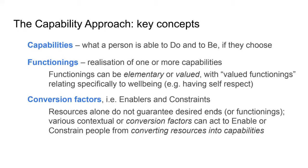These concepts include capabilities, functionings, and conversion factors. Capabilities are what Sen calls substantial freedoms — if a person has the freedom to choose what they are able to do and to be. These might include things like having good health, adequate shelter, or bodily integrity as Martha Nussbaum identifies. Functionings are the realizations of one or more of these capabilities in an individual's life, and we'll use the term 'valued functionings' — from Sen's terminology — to refer specifically to those functionings that are about well-being.